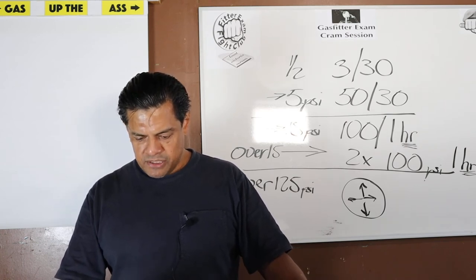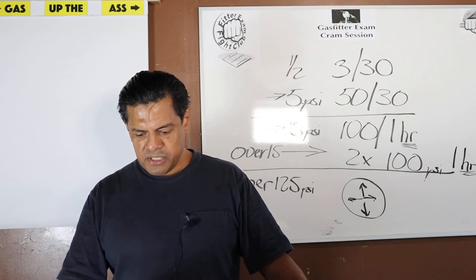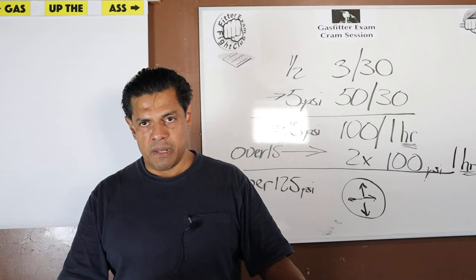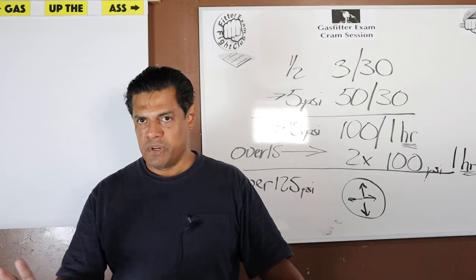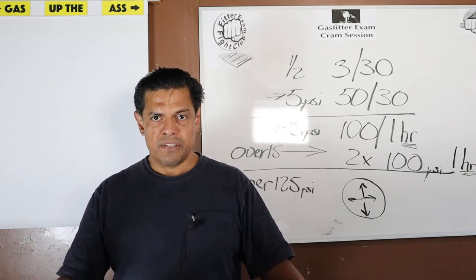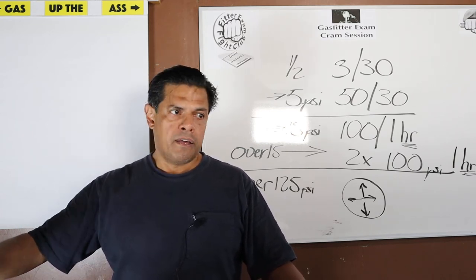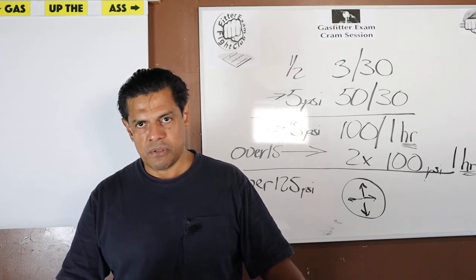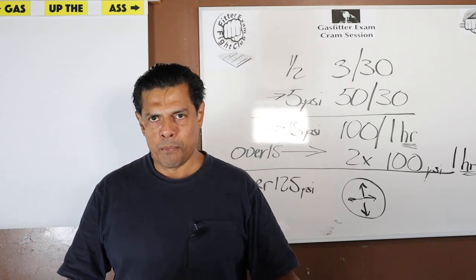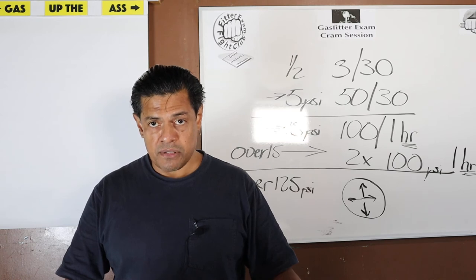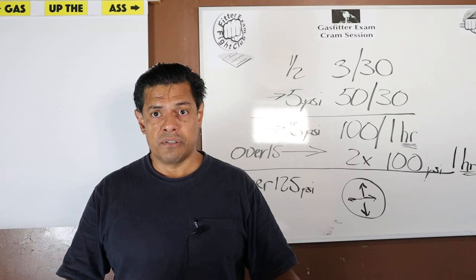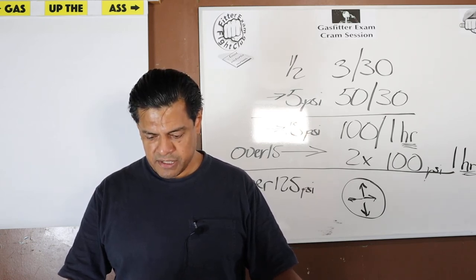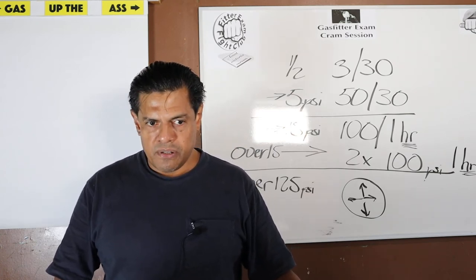Air or inert gas — don't test with oxygen. Oxygen is an oxidizer: anything that burns will burn even better with oxygen nearby. If you want to avoid any chance of fire, don't have oxygen present during testing. Use air or an inert gas. Nitrogen is an inert gas. Hydrogen, on the other hand, is not — it's extremely flammable and volatile. Don't use hydrogen either.